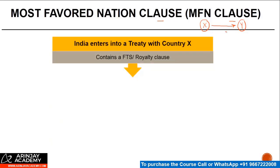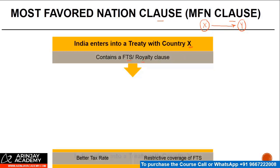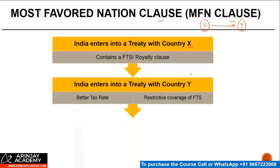So for example, India enters into a treaty with country X, which contains a clause relating to royalty and FTS. Subsequently, India enters into a treaty with country Y and the rate of royalty taxation — let's say the rate of royalty taxation here is 15% — in this new treaty that India has entered into, it says the rate of taxation will be 10%, or there is a restrictive coverage of FTS. For example, it says that FTS will be taxable in India only when it is satisfying the make available condition, something which we discussed earlier.